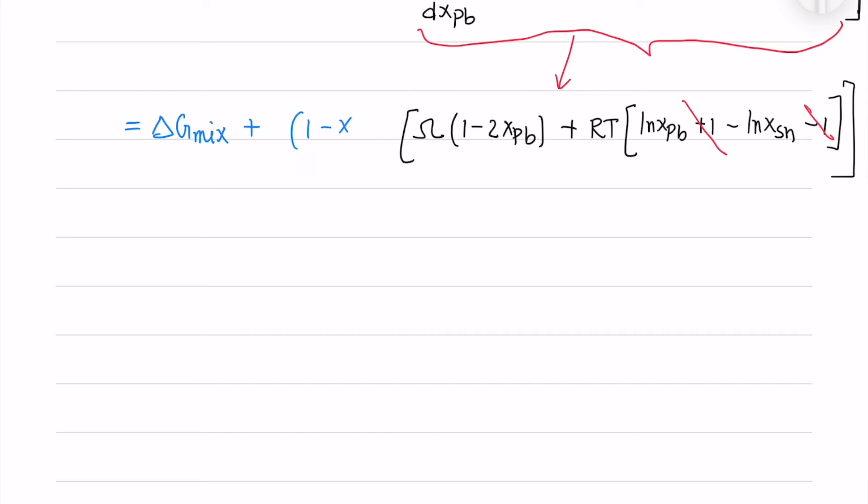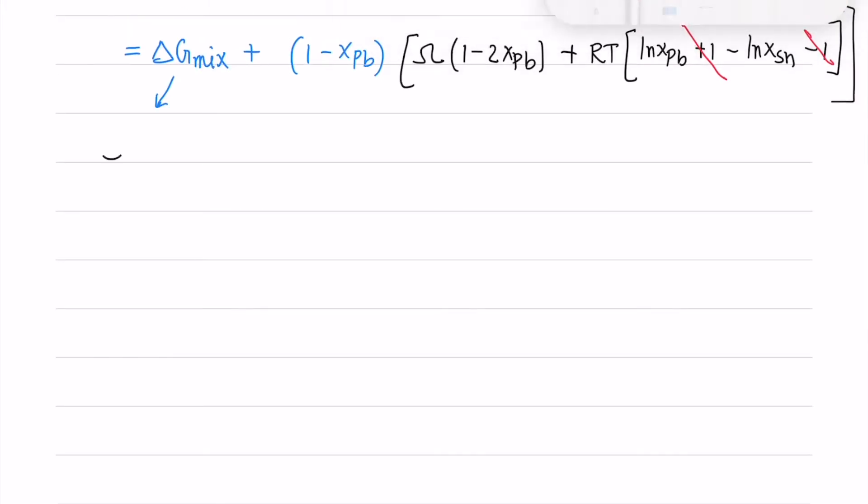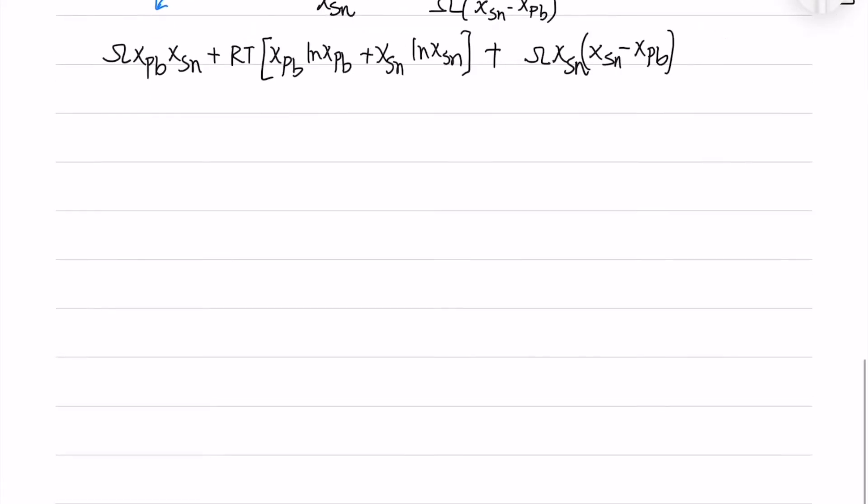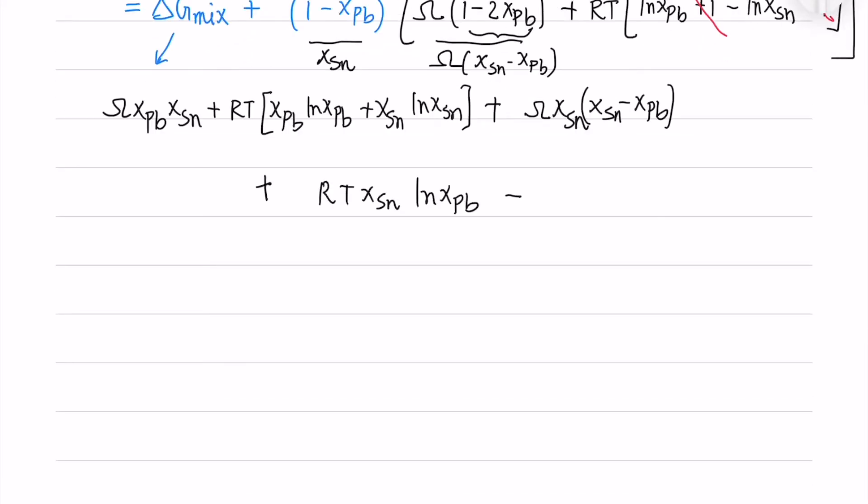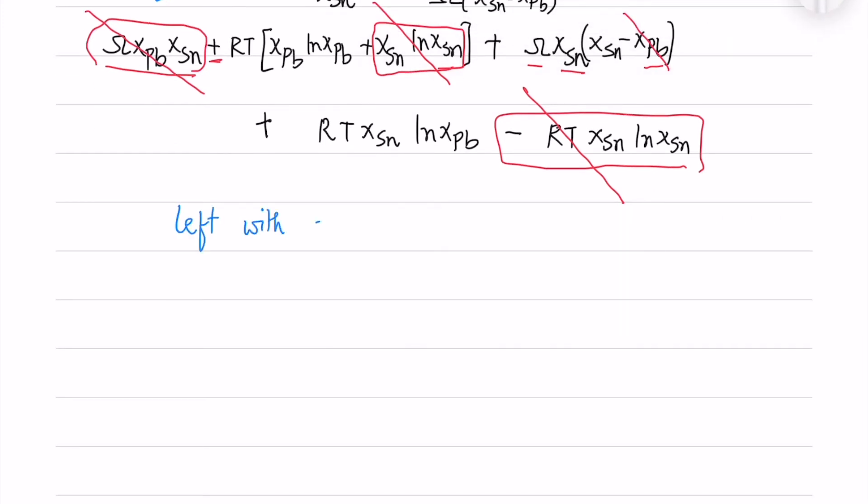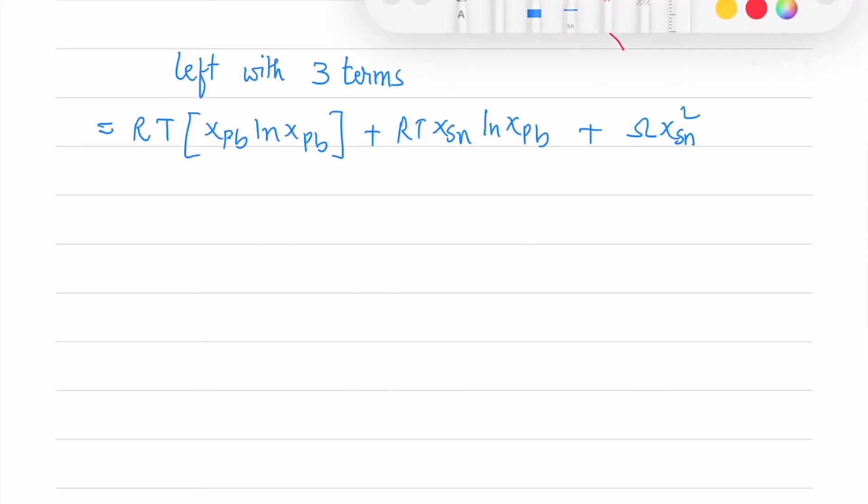I have delta G-mix plus (1 minus x_Pb). I have to multiply and expand this term. I will expand the delta G-mix term as well so that I can simplify the whole equation. I will take 1 minus x_Pb equals x_Sn, and then I can write in this form: RT ln x_Pb and RT ln x_Sn. I have circled two terms - they are plus and negative terms which get cancelled. Now this term cancels with the minus x_Pb. So we are left with three terms.